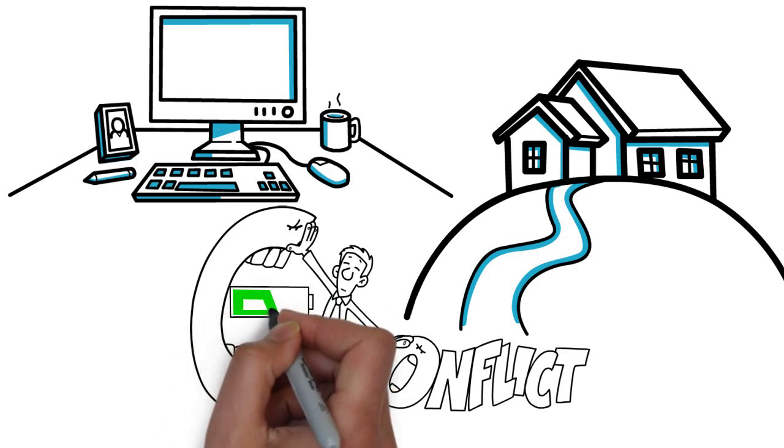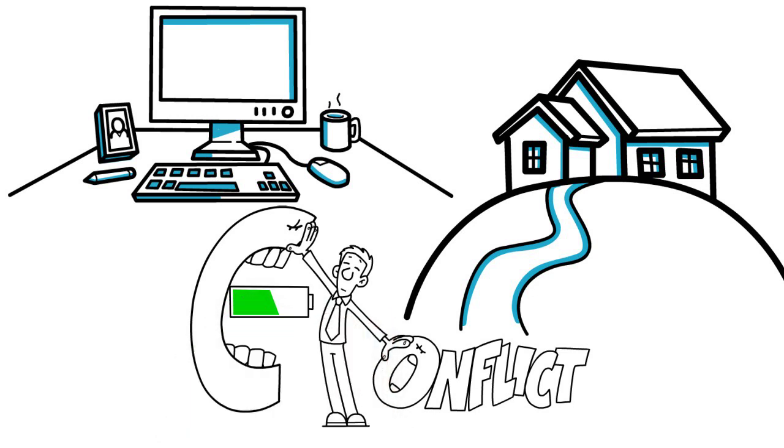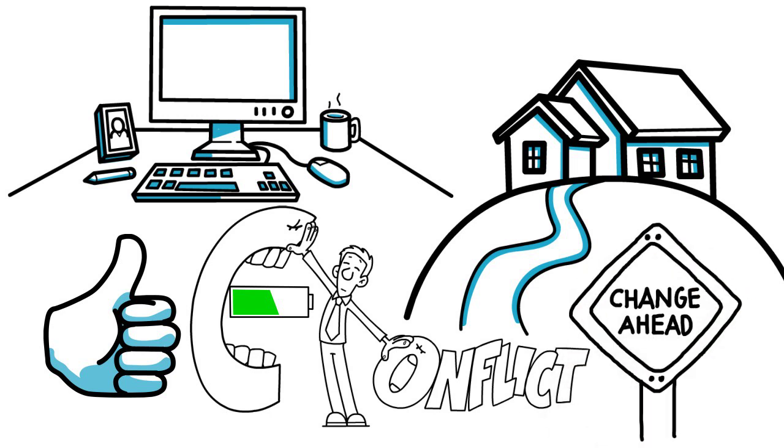What about the annoying conflict that eats away energy? Is there a way to engage with conflict constructively and use that energy for positive change? These five golden rules provide some guidance on what to do about conflict.